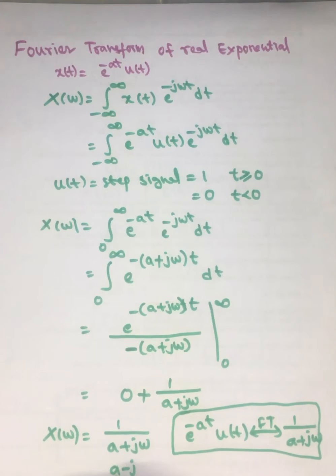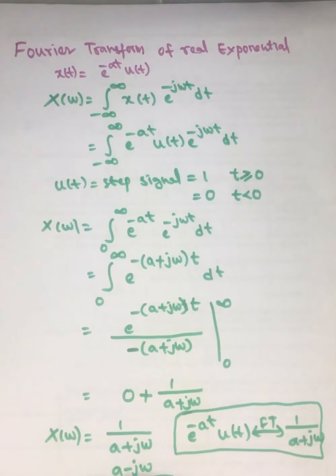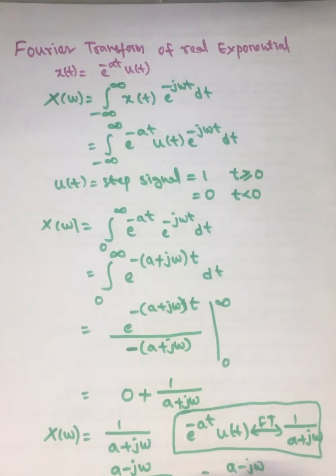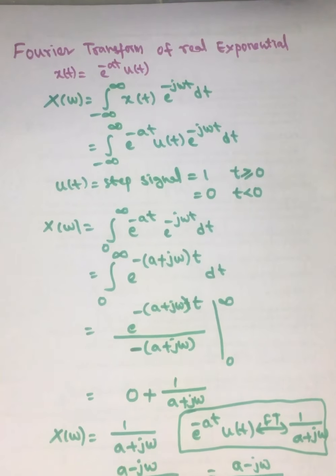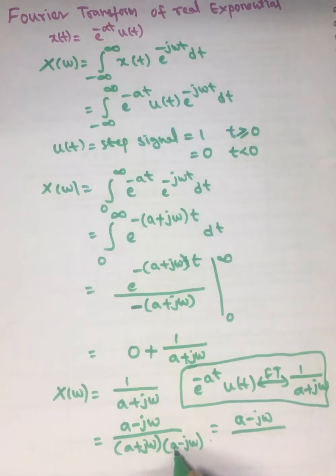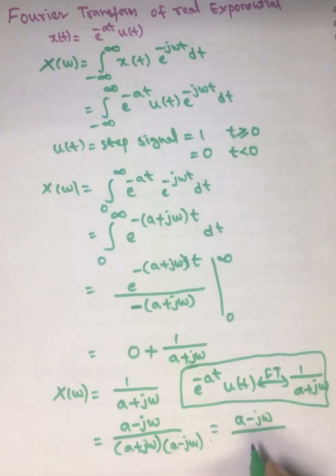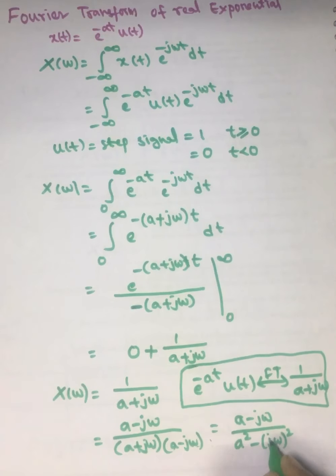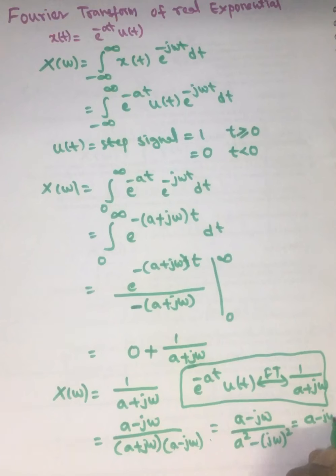Multiplying by the conjugate, we get (a - jω) divided by (a + jω)(a - jω). This product is in the form (a + b)(a - b) = a² - b², so it becomes a² - (jω)². Since j² = -1, minus minus becomes plus, giving us (a - jω) divided by (a² + ω²). This is our X(ω).